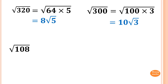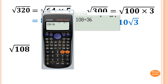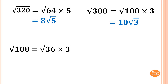Alright, √108. Now if you remember the divisibility test — 1 plus 0 plus 8 is 9, so it's divisible by 9. So 108 divided by 9 gives me 12. Now 12 has another square number — 4 is a square number. So 9 times 4 is 36, correct. So 108 divided by 36 gives 3, meaning 36 times 3. Square root 36 is 6, so the answer is 6√3.